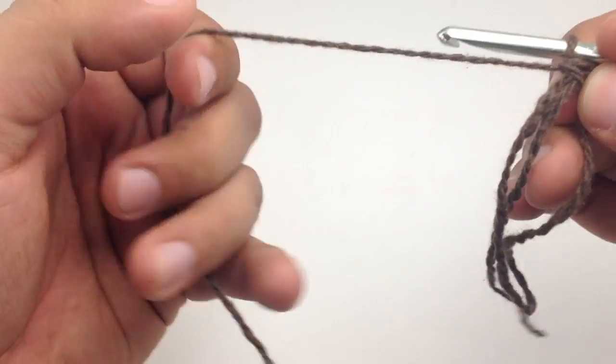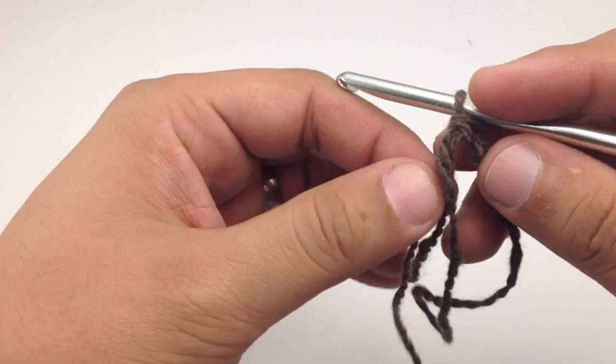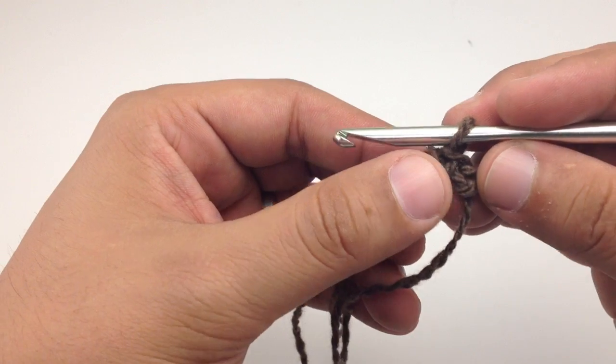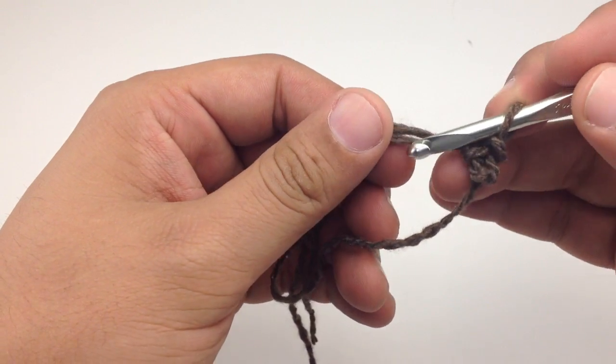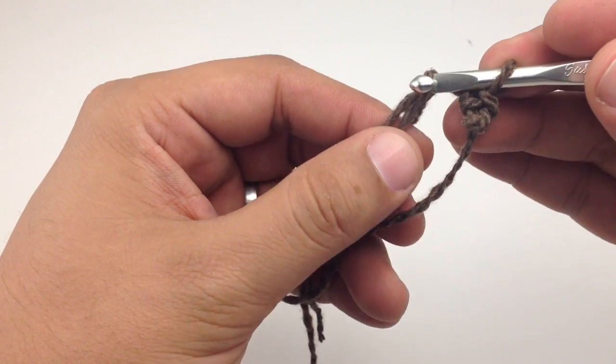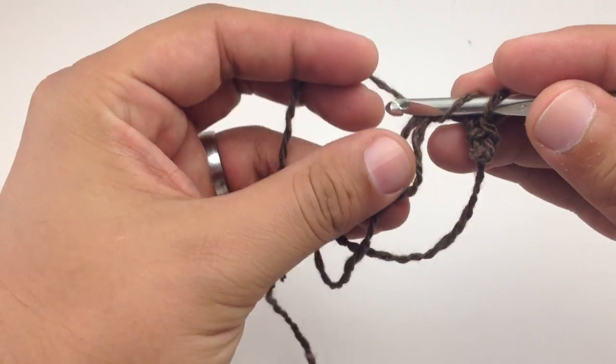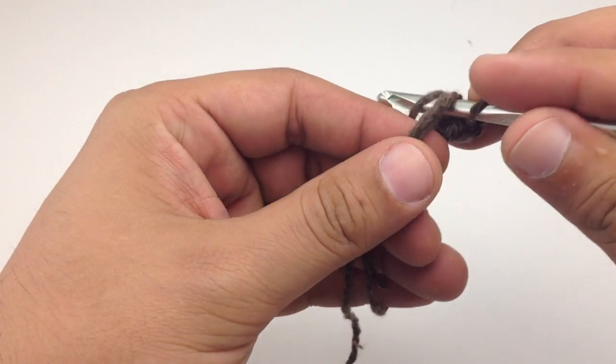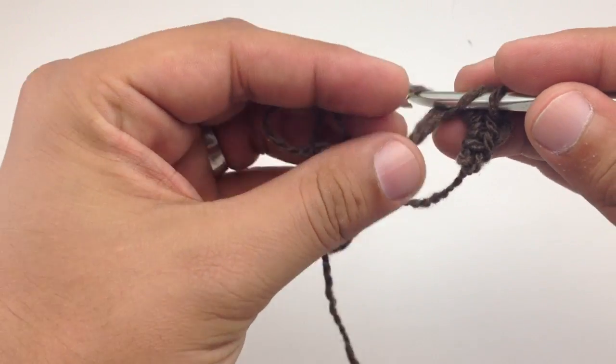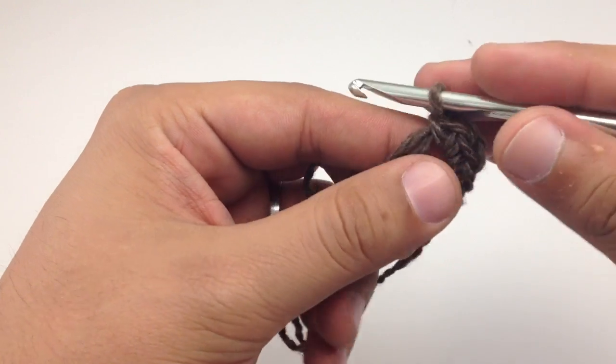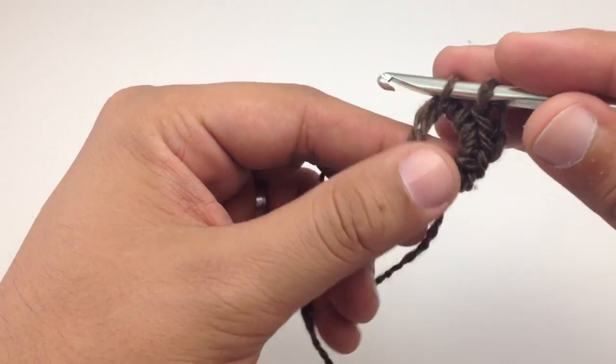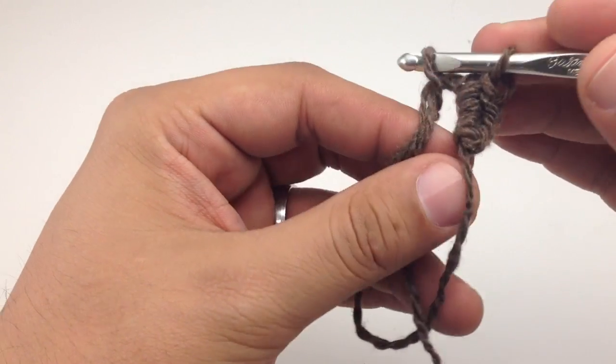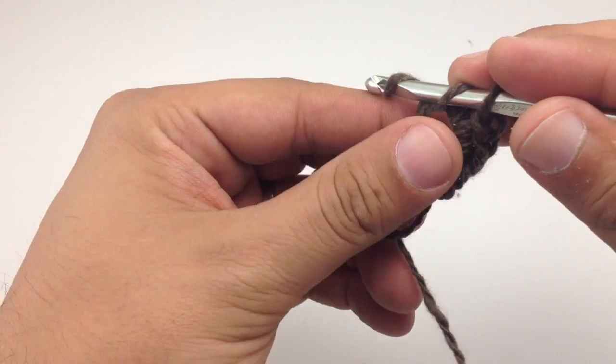Just like that. And then we're going to repeat the single crochet until we've created as many stitches as we need for our pattern. We'll just continue doing the single crochet until we've cast on all of our stitches in our foundation row here.